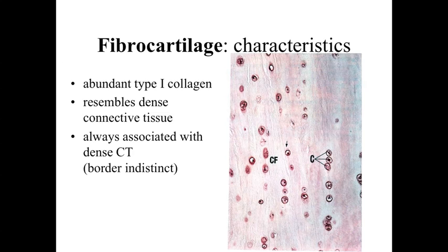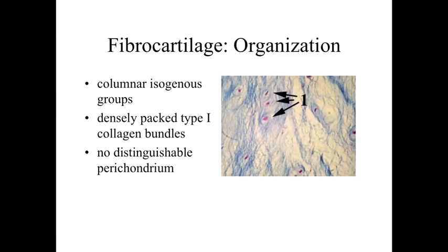Fibrocartilage looks like dense regular connective tissue, but rounded cells and sometimes isogenous groups are the distinguishing indicators. It differs from hyaline and elastic cartilage because it has densely packed type 1 collagen bundles and no distinct perichondrium around the outside.